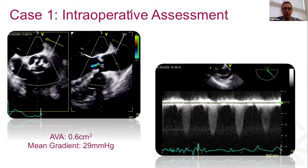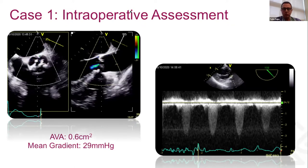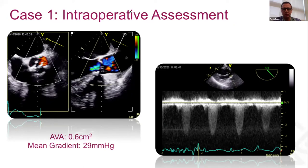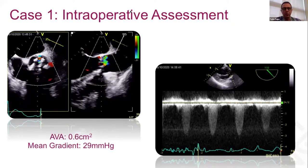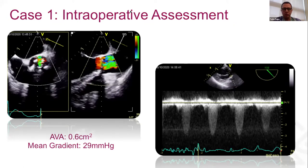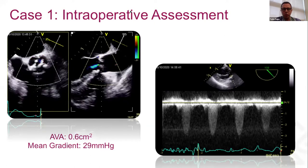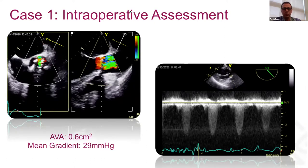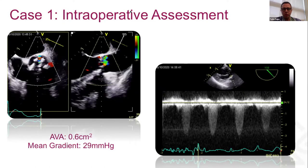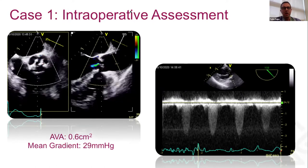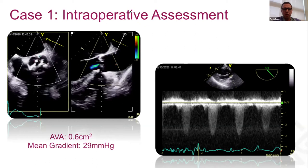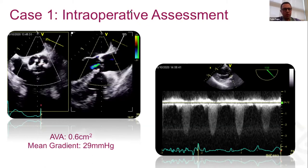Our intraoperative TEE assessment confirmed the patient had really severe aortic stenosis. Using the x-plane or biplane view, we can see the aortic valve is pretty calcified with very poor opening. After performing all the measurements, we obtained an aortic valve area of 0.6 square centimeters and a mean gradient of 29 mmHg, likely low because of the reduced ejection fraction.